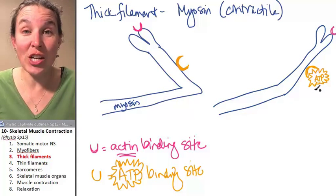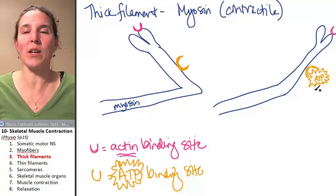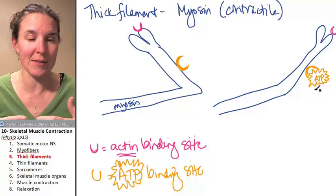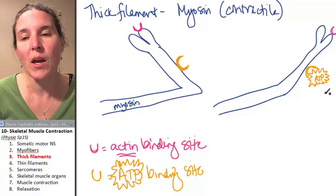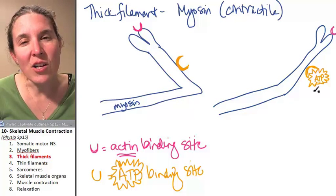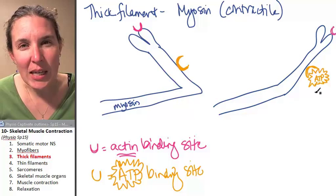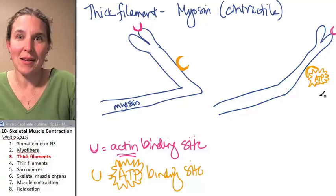And the energy that's in ATP, we know that ATP is amazing. It's like this energy-rich molecule. The energy that was in ATP is used to pull back the myosin head.